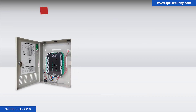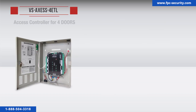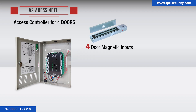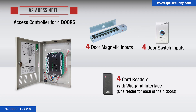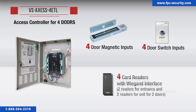The VS Access 4 ETL version 2 is an access controller for four doors. This system can connect up to four door magnetic inputs, four door switch inputs, and four card readers with Wiegand interface — one reader for each of the four doors, or two readers for entrance and two readers for exit for two doors.